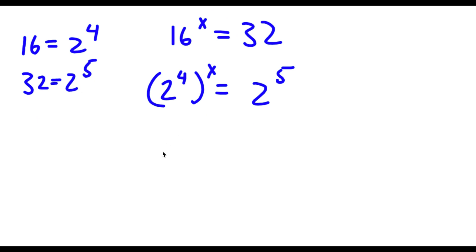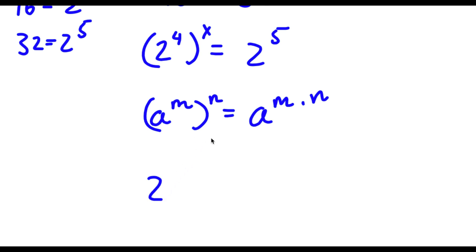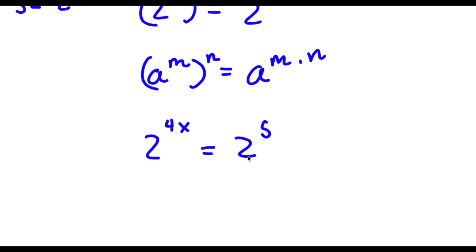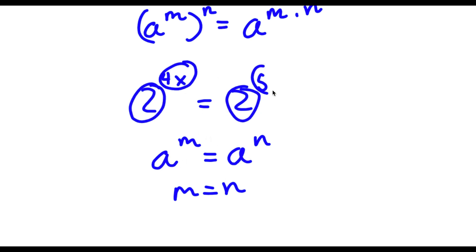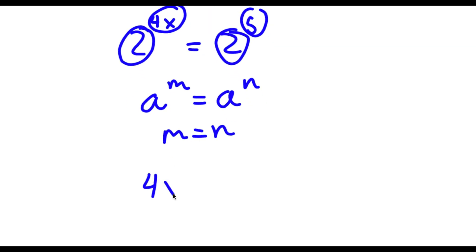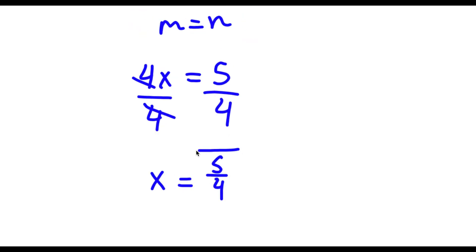If I have something in the form a to the power of m to the power of n, this is the same thing as a to the power of m times n. So 2 to the power of 4 to the power of x equals 2 to the power of 4x, which equals 2 to the power of 5. Since both bases are the same, the exponents must be equal, so 4x equals 5. Dividing both sides by 4, x is equal to 5 over 4.